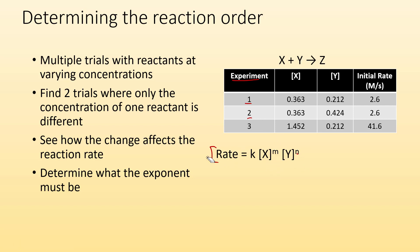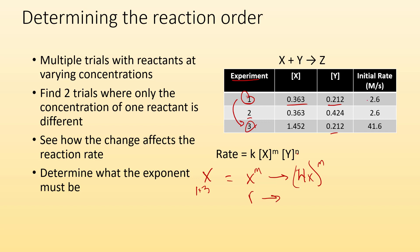If I'm trying to figure out the exponent for X, I want two trials where X changes but Y is the same. That's trials one and three — X changes but Y doesn't. Between trials one and three, the concentration of X quadruples. So we have 4X to some power M. What happens to the rate? It goes from 2.6 to 41.6, so 41.6 divided by 2.6 gives us 16. We quadrupled the concentration and the rate went up by 16. So four to the power M equals 16, which means M must be two.